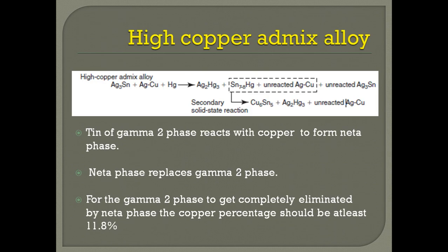In high copper alloys, the same reaction will occur except that the presence of eutectic silver-copper will result in formation of eta phase, due to the reaction between the copper of the eutectic mixture with the tin of the gamma-2 phase. Both result in formation of eta phase, and as a result the gamma-2 phase will degrade over a period of time. The minimum concentration of copper to fully replace the gamma-2 phase is 11.8%.